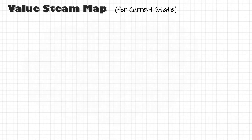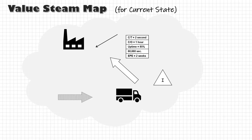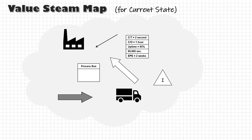We are going to use a set of symbols or icons to represent processes and flow. Though it is not mandatory to follow the same symbols, it is recommended to use them so that your value stream map can be easily understood even by the people outside your organization.